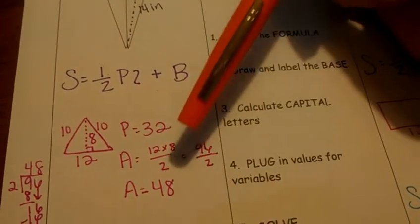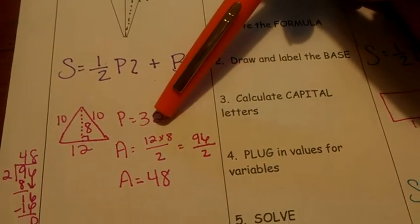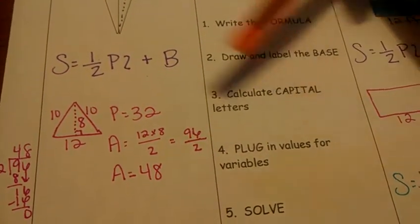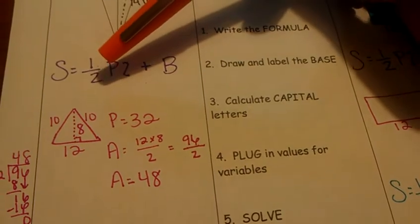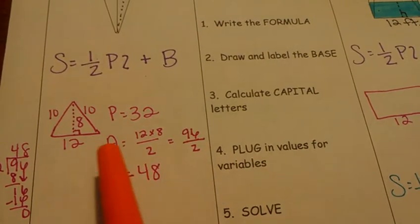So for perimeter, add up all your sides. 10, 20, 32. So my perimeter is 32. Calculate in capital letters. I've got two capital letters. I've got capital P and a capital B. So now I've got to go and find the area of my base.